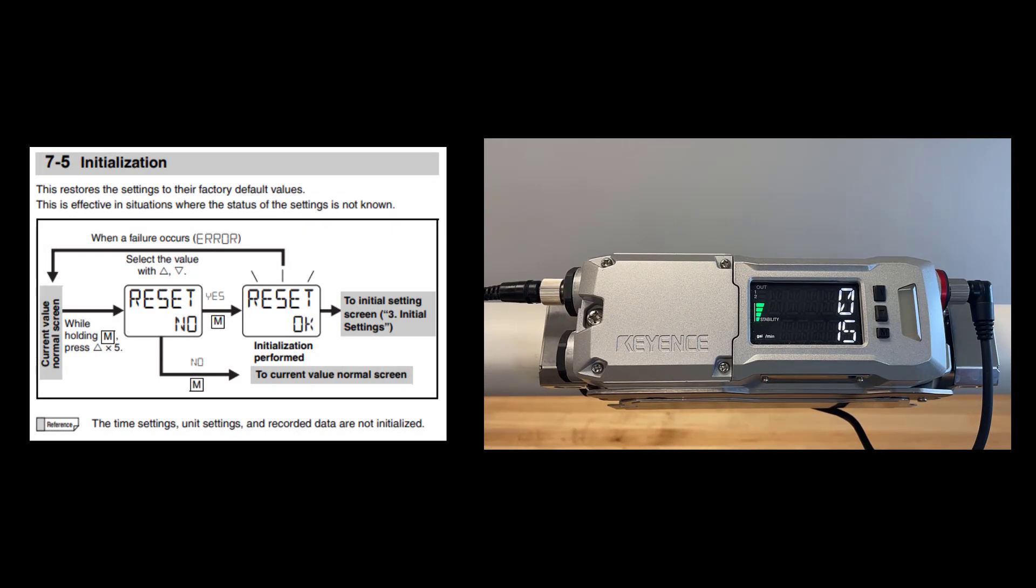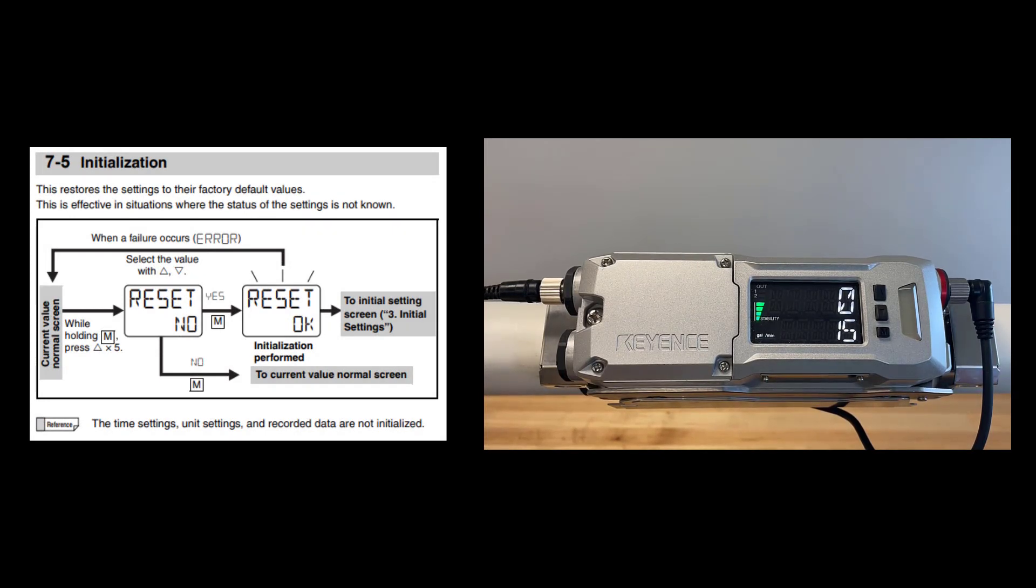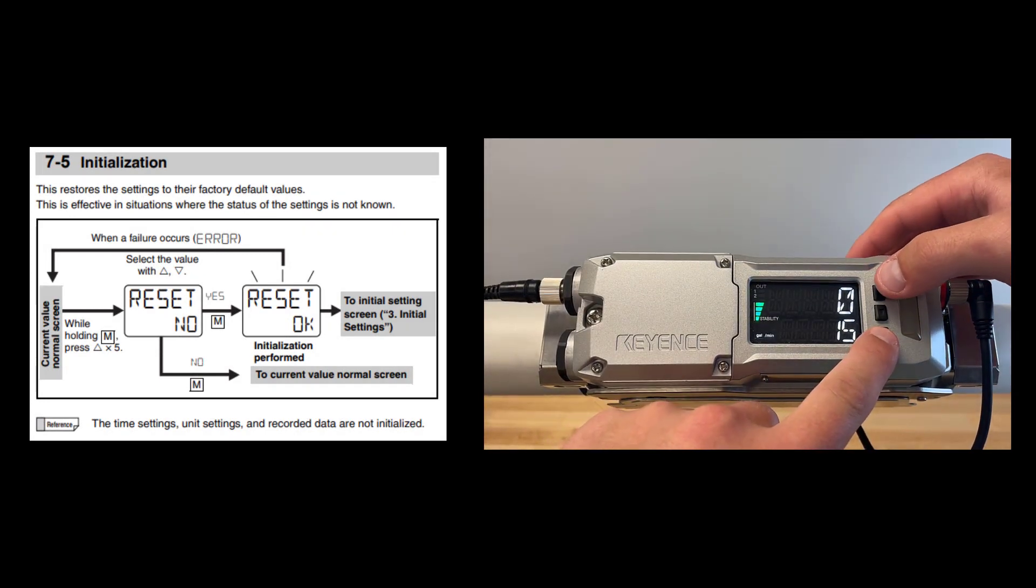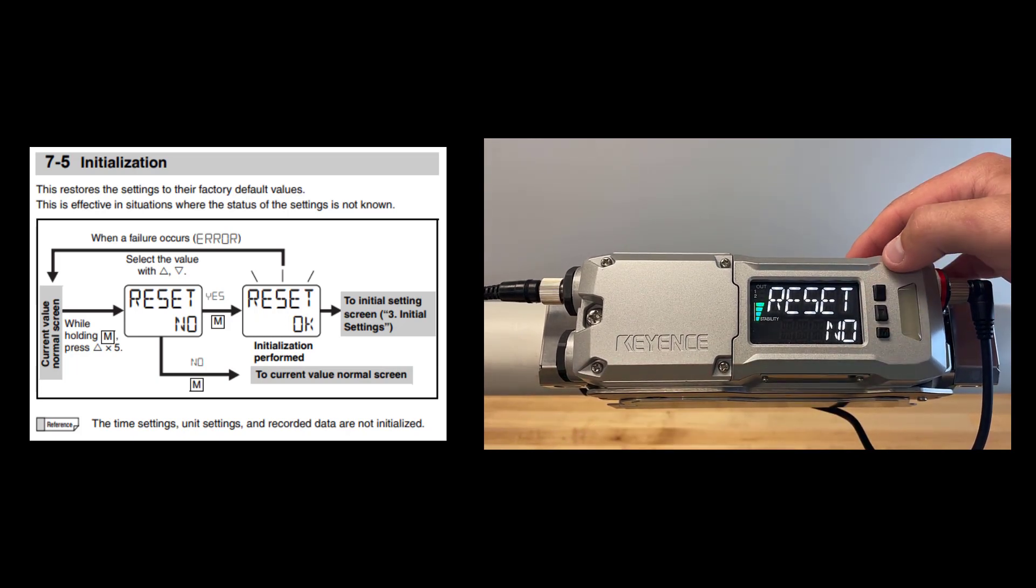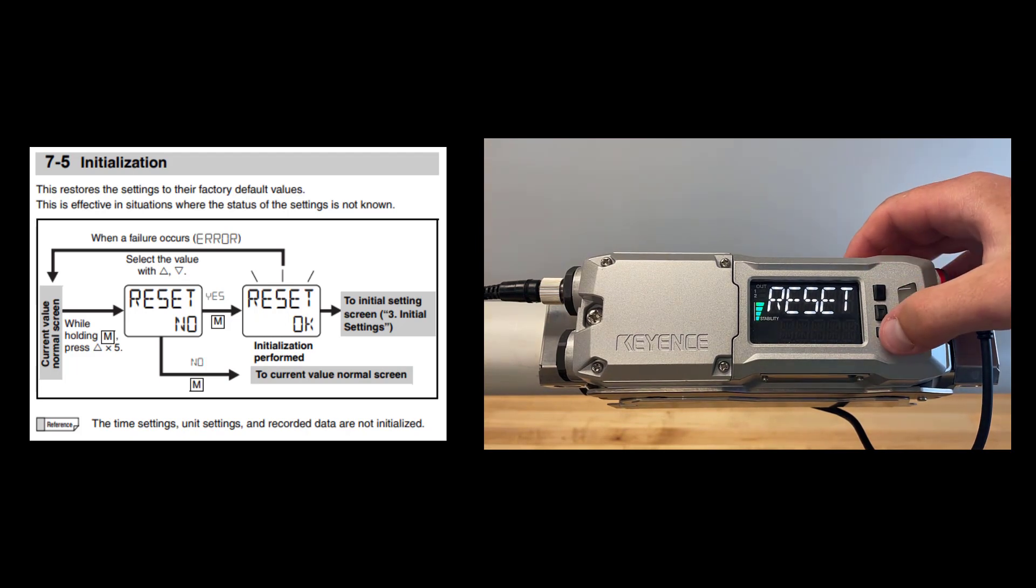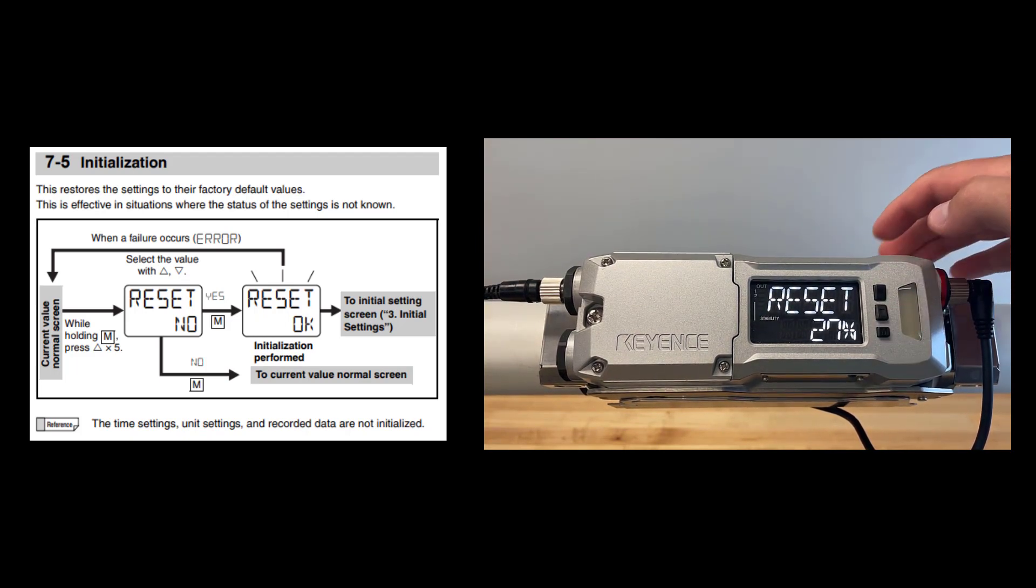If at any point you need to change or modify any of those initial settings, hold mode and tap the up arrow key five times. Reset should be displayed. Tap the up arrow once to cycle to yes, and tap the mode button one more time to initialize and bring the unit back to a factory default state.